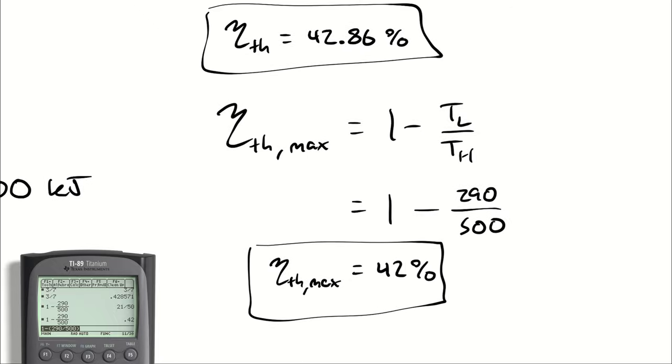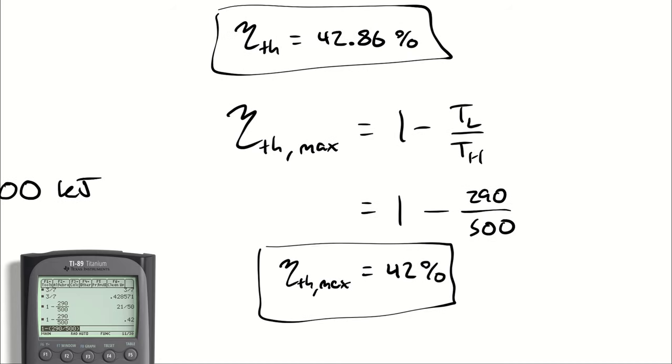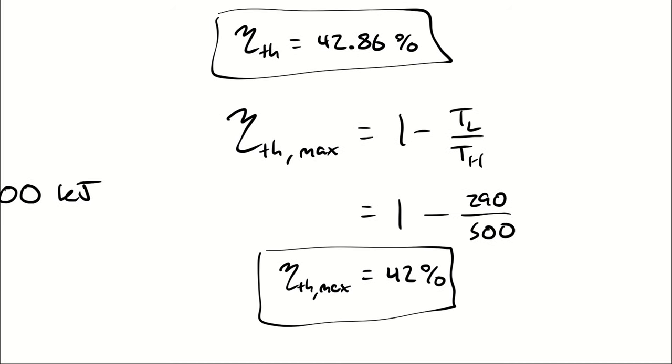So we compare our thermal efficiency to the theoretical maximum, and we see that our thermal efficiency is higher than the theoretical maximum. We are producing more work from this amount of heat transfer than is possible if there were no losses and everything were perfect. Therefore, this efficiency cannot occur, which means this is not a reasonable claim.